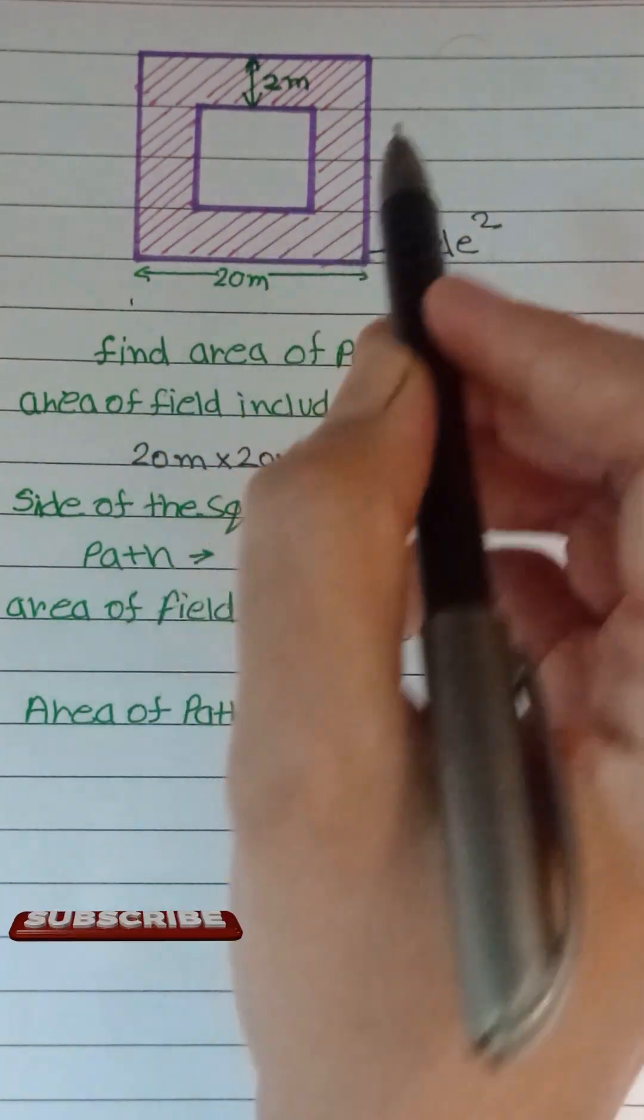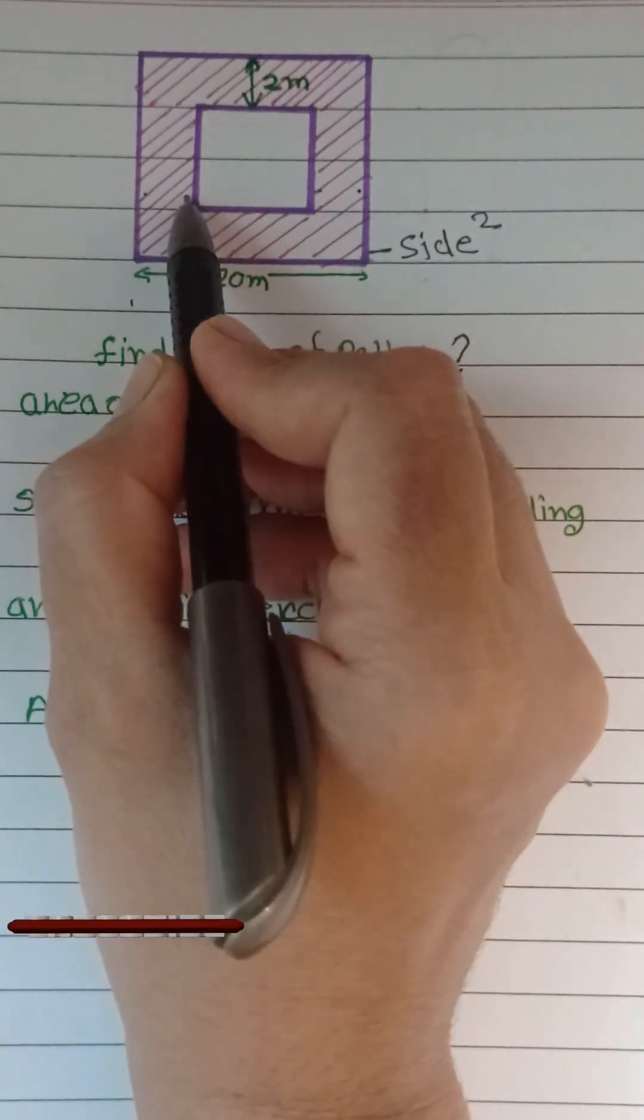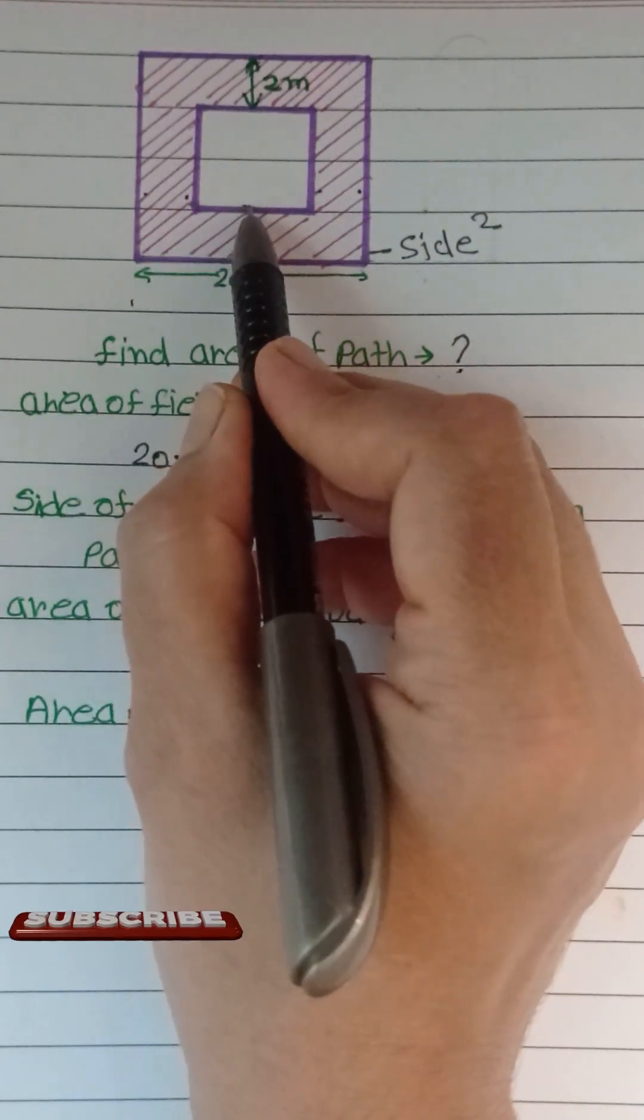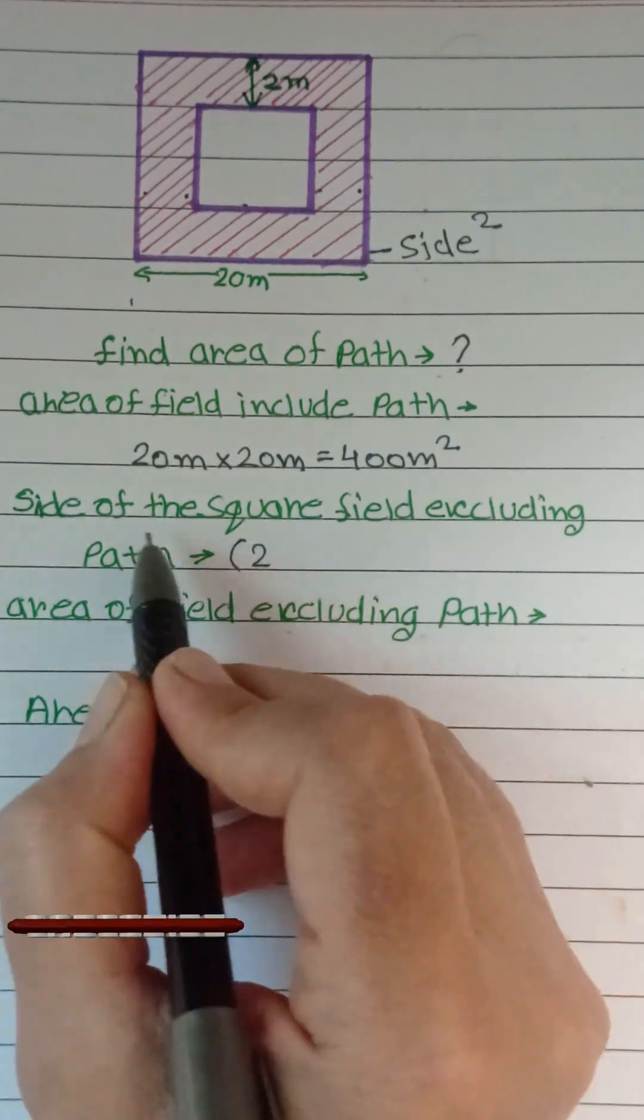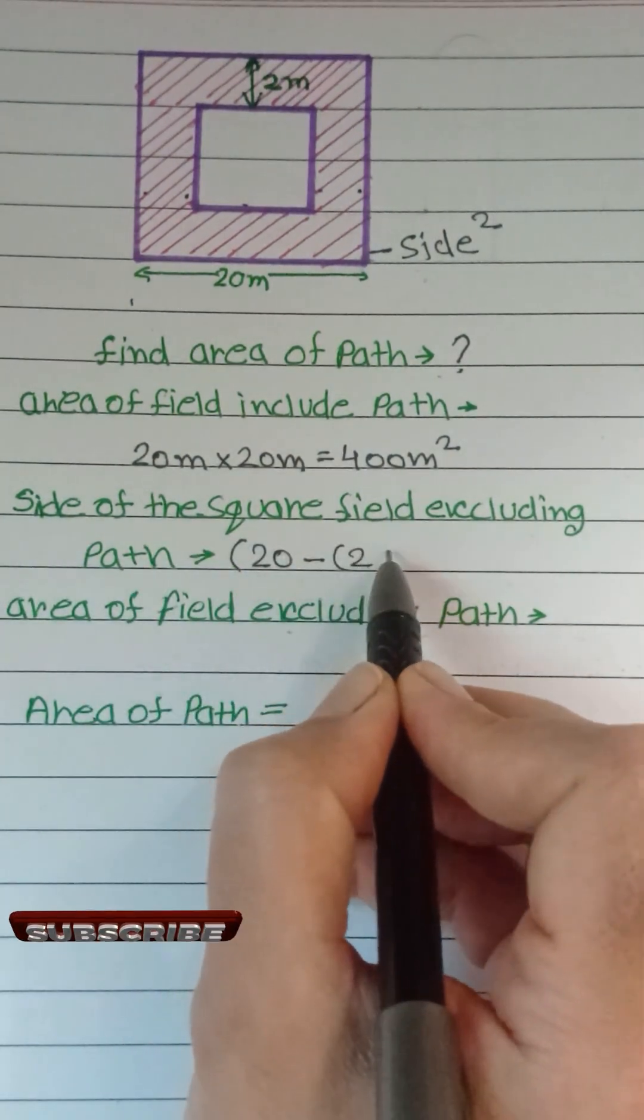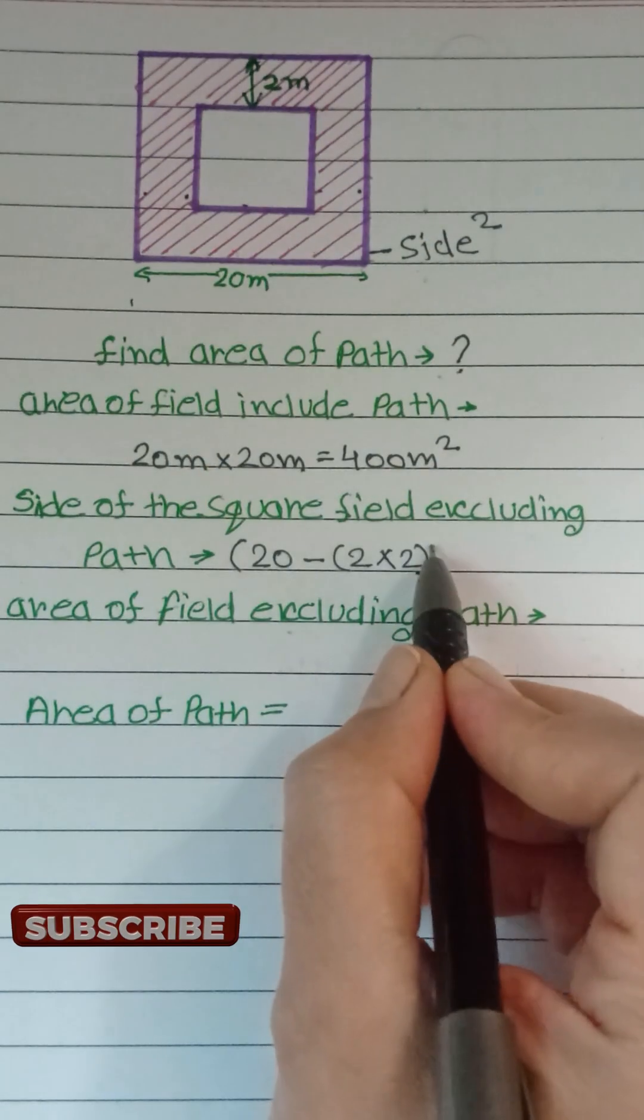For area of inner field, first we find side of inner field by subtracting the width of path from side of outer field.